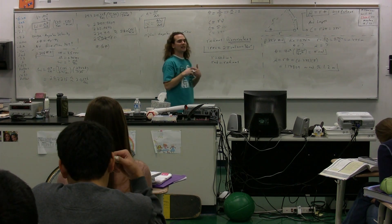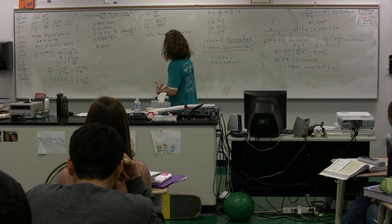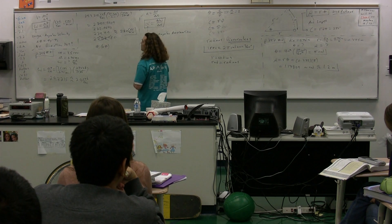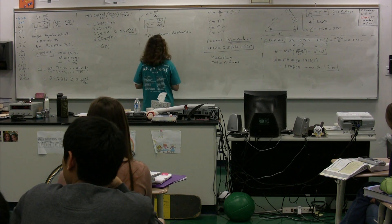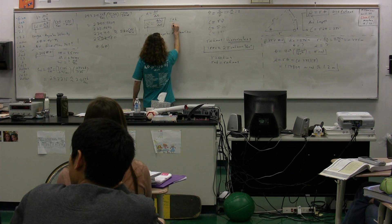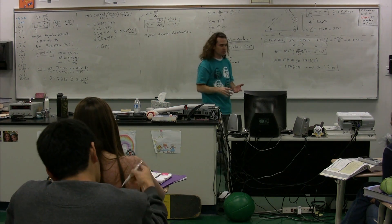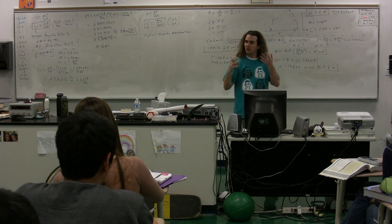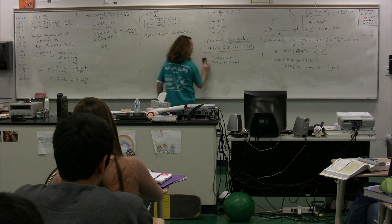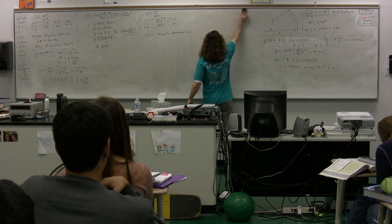What are the dimensions on angular acceleration? Probably going to be radians per second squared. Radians per second squared — we could have all sorts of things, like revolutions per decade squared, but in the end, radians per second squared is pretty much the only thing you're going to see for angular acceleration.